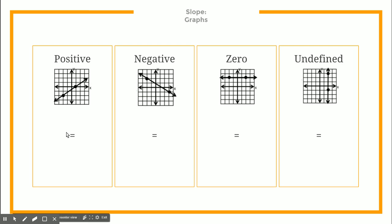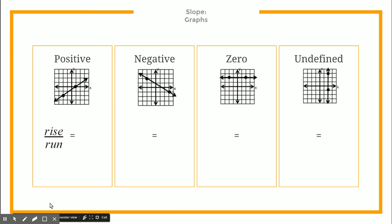Let's talk about how to find a slope from a graph. This is actually a very easy concept — remember rise over run. When I have this line on the graph, I draw a vertical line up from the lower dot until it's on the same level as the other dot. I see that I went up one and then two, until I was on the same line as the other dot, so my rise is going to be two.